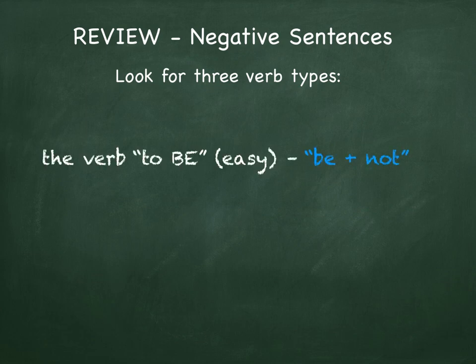We're looking at three kinds of sentence, three verb types. The first is the verb to be, which has the pattern of be plus not. For example, I'm not ready, or they aren't engineers.